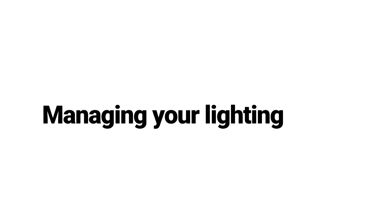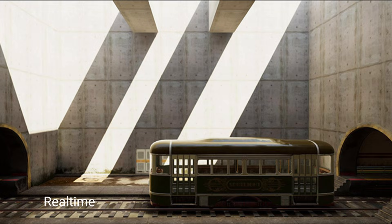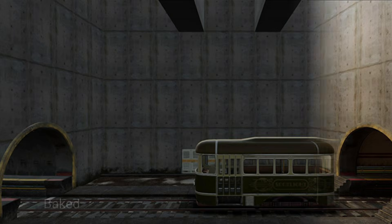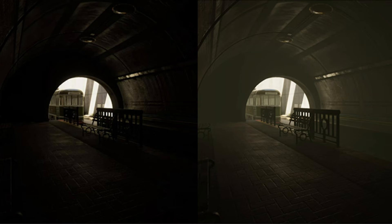Manage Your Lighting. The Universal Render Pipeline has been built with optimized real-time lighting in mind. In the URP Forward Renderer, you can have up to 8 real-time lights per object, and up to 256 real-time lights per camera on desktop and 32 real-time lights per camera on mobile and Switch. The Universal Render Pipeline also allows for configurable per-object light settings inside of the pipeline asset for even more control over your lighting.